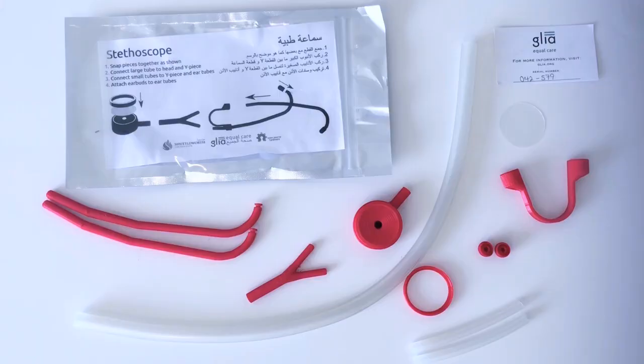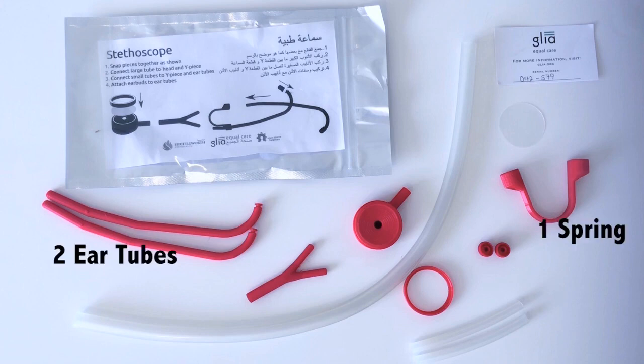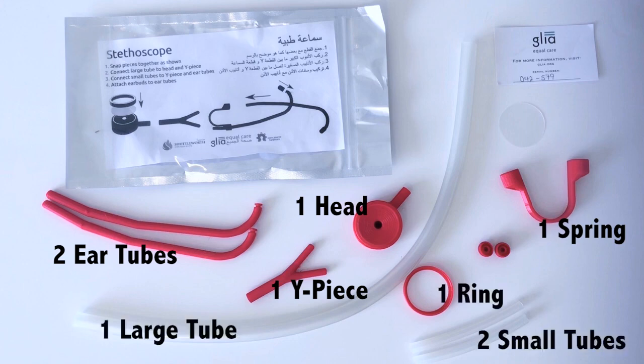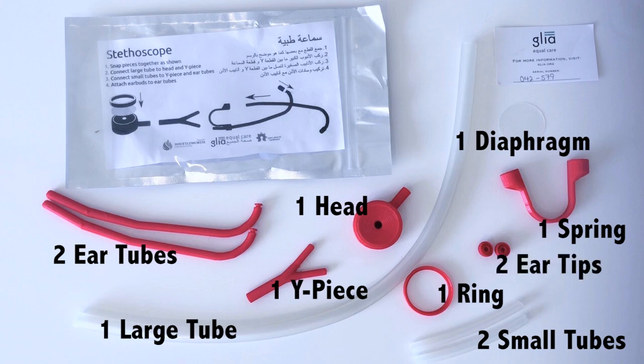First, we will review the parts of the stethoscope included in the package. You should have two ear tubes, one spring, one Y piece, one stethoscope head, one ring, one large tube, two small tubes, one diaphragm, two ear tips, and a card with your stethoscope serial number.